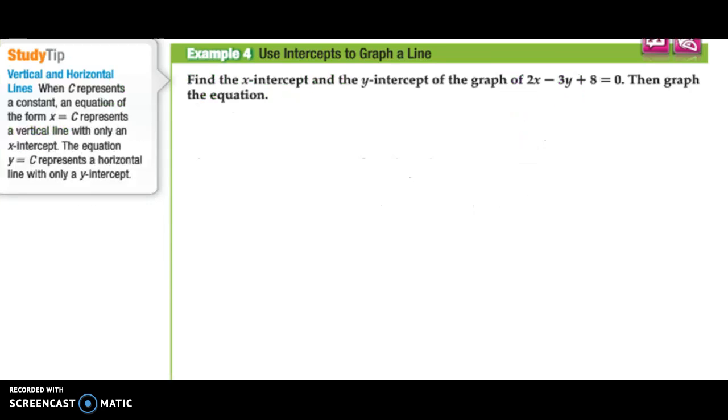Example 4: Find the x-intercept and the y-intercept of the graph 2x minus 3y plus 8 equals 0. Then graph the equation. Essentially, we're trying to find the x-intercept when y is 0, the y-intercept when x is 0, and then we can use that to graph. I'll set it up: x-intercept, y-intercept. When I'm looking for my x-intercept, it's when y is 0.